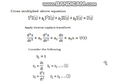Applying the inverse Laplace transform: s³·X(s) becomes d³x/dt³, s²·X(s) becomes d²x/dt², s·X(s) becomes dx/dt, and X(s) becomes x(t). So the equation becomes: d³x/dt³ + a1·d²x/dt² + a2·dx/dt + a3·x = u(t).